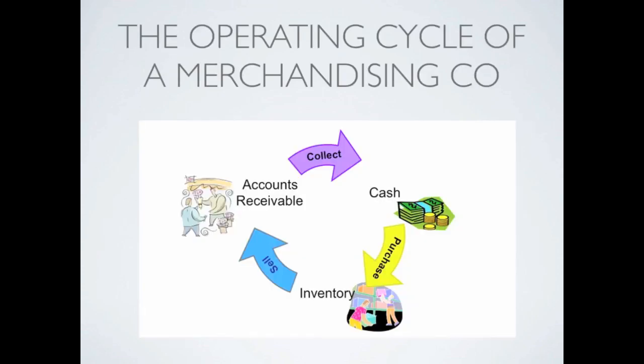The first thing we'll look at is the operating cycle of a merchandising company. Step one is we have to get cash into the business somehow or another. There are a couple of ways this can happen. If you're a new startup business, the owners can invest cash for stock, and therefore you have cash. Or if you are a business that has been generating revenues in the past, you can collect on those sales to get cash. With that cash you will purchase inventory.